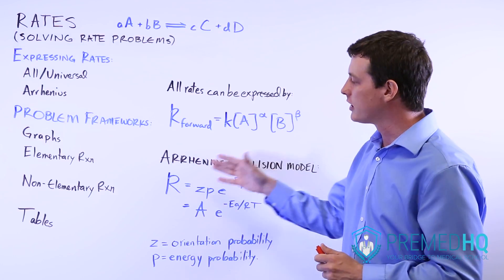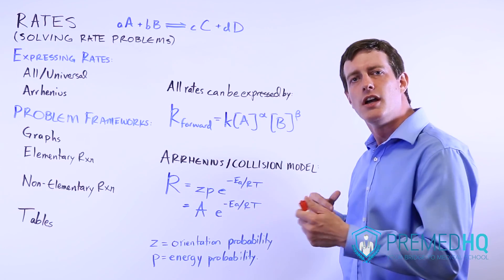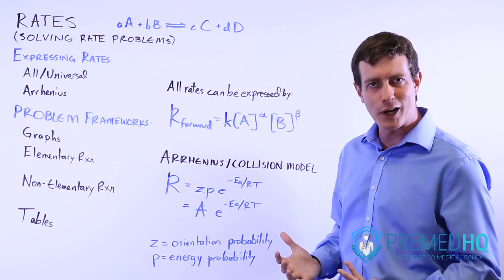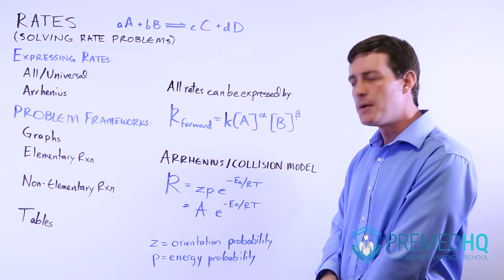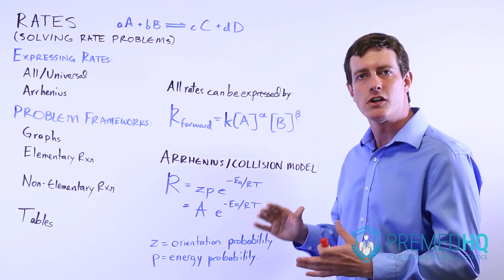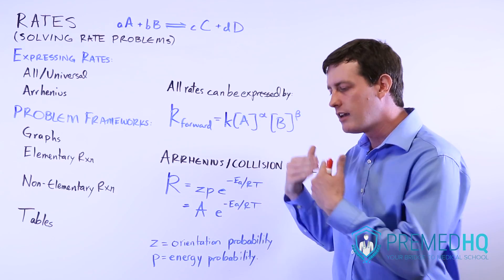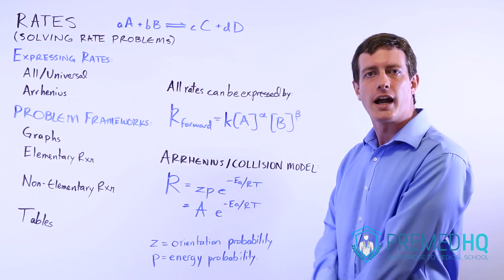Those are both ways you can increase rate, and these should be fairly intuitive. If you increase temperature, you have more collisions with greater energy. It makes sense that the reaction could happen better. And if you reduce the activation energy, it's going to be much easier to reach that transition state and then move into the newly bonded reaction.